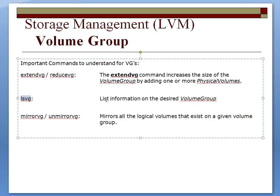If you need to replace a disk, for instance, you need to first remove all the data off that disk, then do a reduce VG on that disk. Mirror and un-mirror are very straightforward — these are the commands you use to mirror the VG, or if you need to break the mirror, you use un-mirror VG.